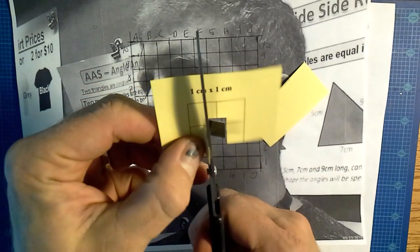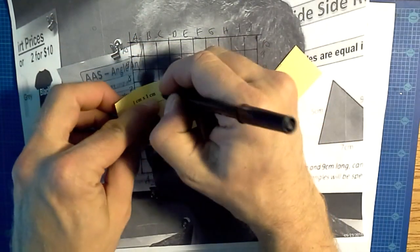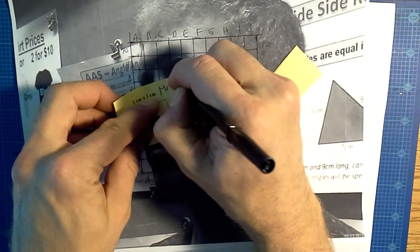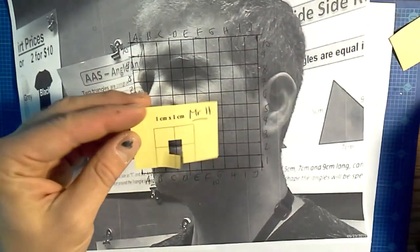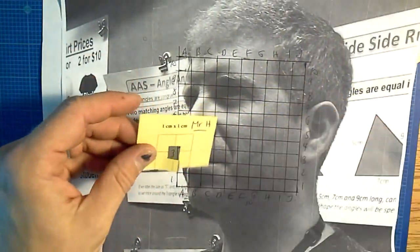And we're going to cut that black square out. There we go, and it's gone. Good idea to write your name on it because other people will steal them.